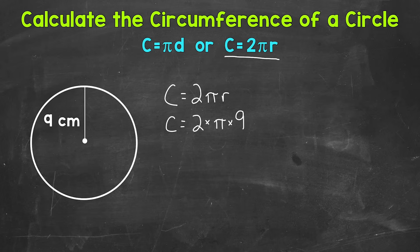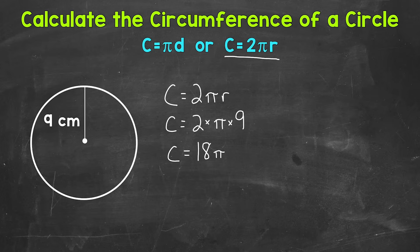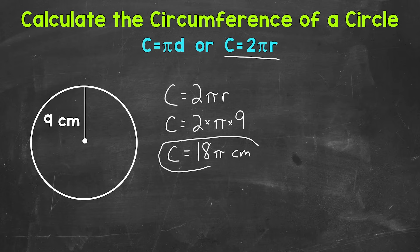So circumference equals 2 times pi times the radius of 9 centimeters. Once we have that 9 plugged in, we can do 2 times 9, which is 18. We can write that as circumference equals 18 pi — we put our number in front of the pi symbol. This is called writing it in terms of pi, meaning we write our number in front of the pi symbol and put our unit of measure, which is centimeters. So circumference equals 18 pi centimeters.